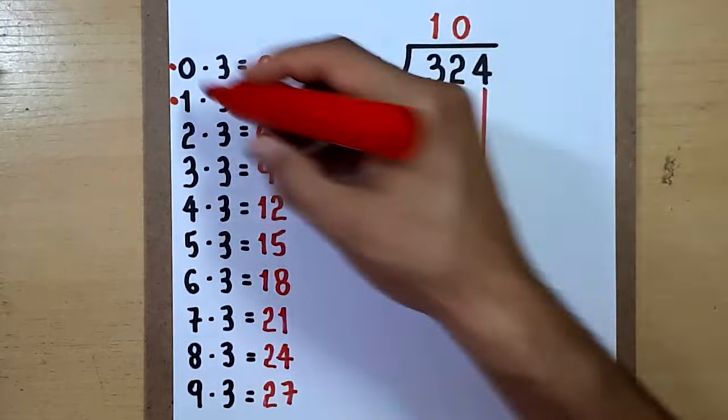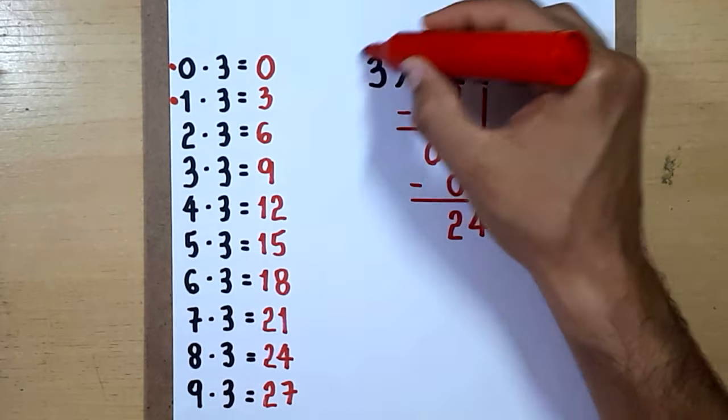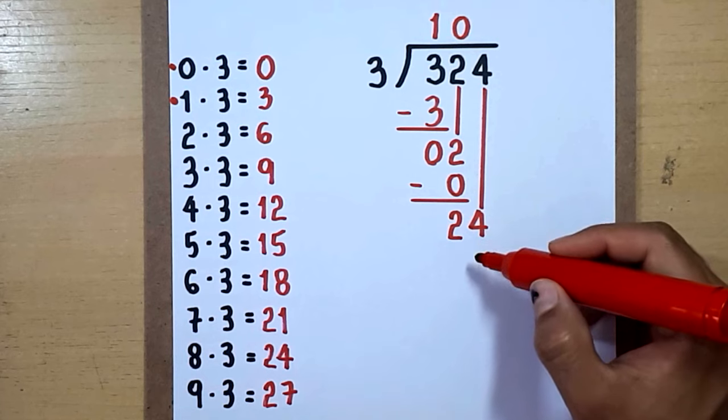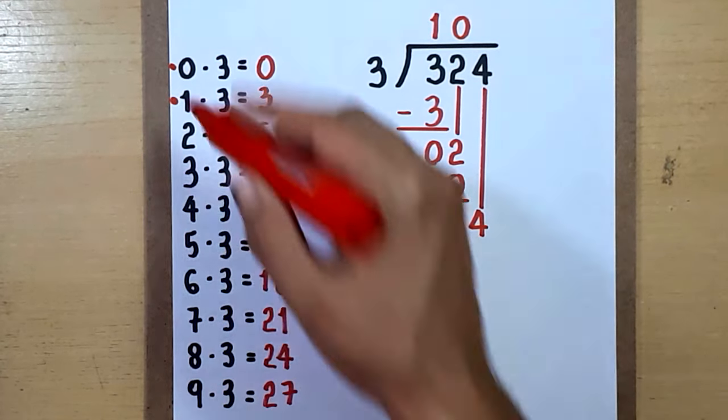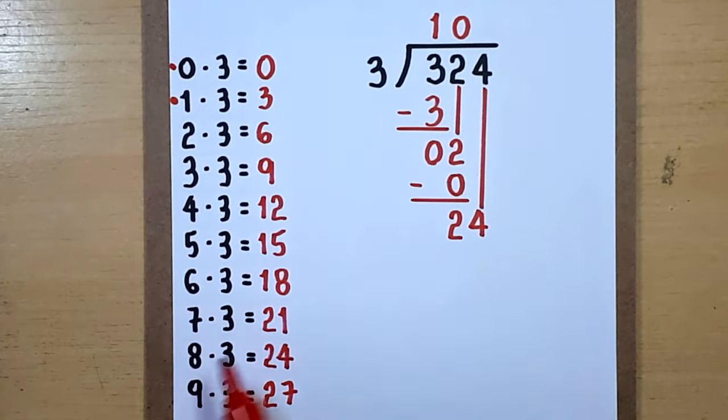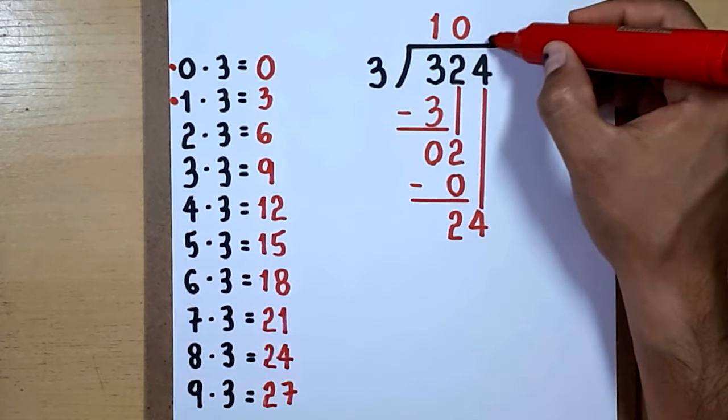What number from 0 to 9 do we multiply by 3 to get 24 or almost 24 but not more than 24? You look at the multiplication table and then you see that the number we are looking for is 8.